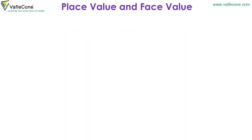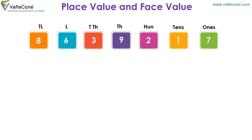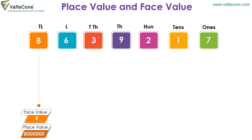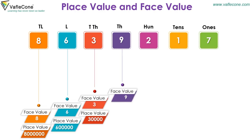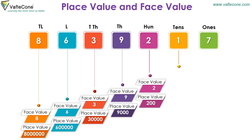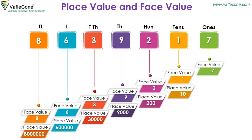Place value and face value for 86,39,217: For 8, face value is 8 and place value is 80 lakh. For 6, face value is 6 and place value is 6 lakh. For 3, face value is 3 and place value is 30,000. For 9, face value is 9 and place value is 9,000. For 2, face value is 2 and place value is 200. For 1, face value is 1 and place value is 10. For 7, face value is 7 and place value is 7.